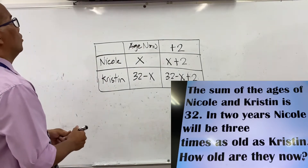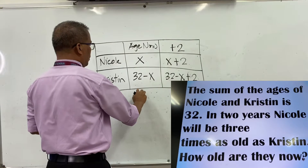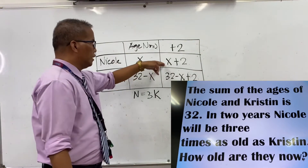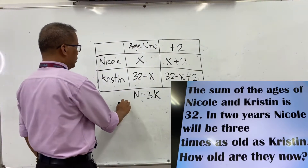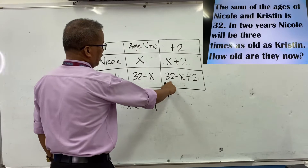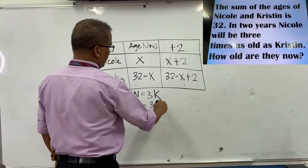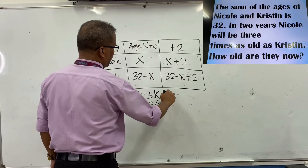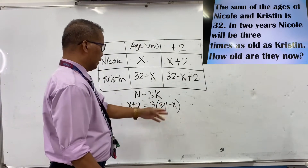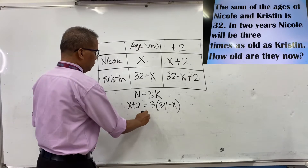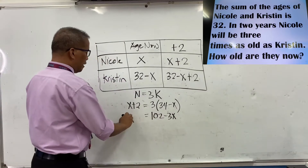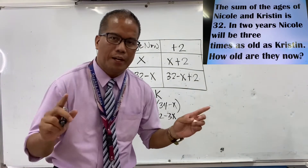Nicole will be three times as old as Christine. Using this, we write: x plus 2 equals 3 times (32 minus x plus 2). Since 32 plus 2 equals 34, we have x plus 2 equals 3 times (34 minus x). Distributing: 3 times 34 equals 102, and 3 times negative x equals negative 3x.